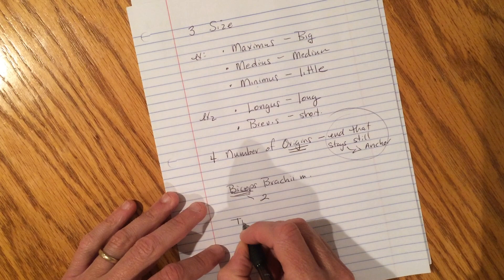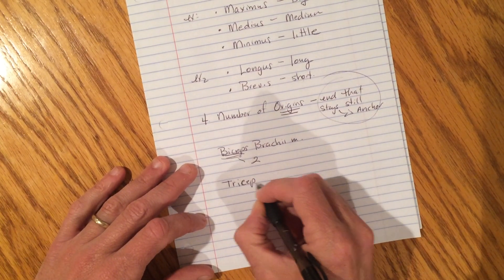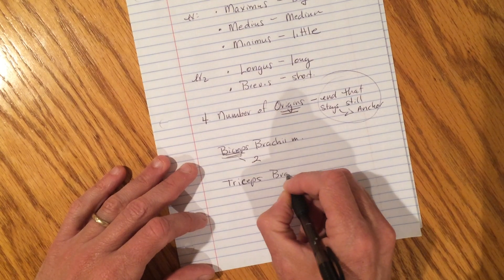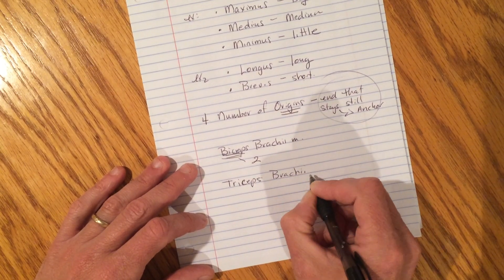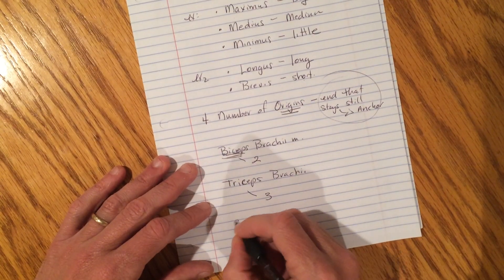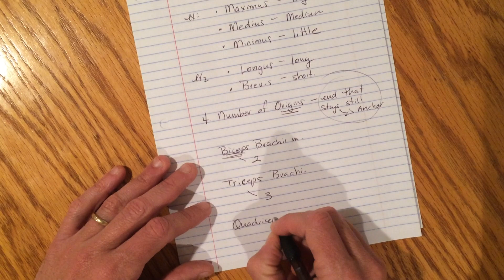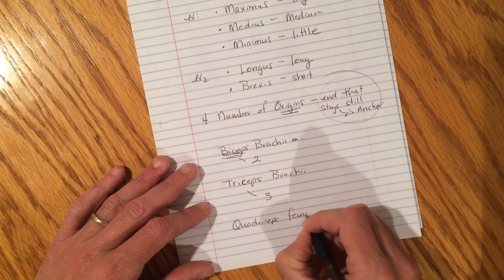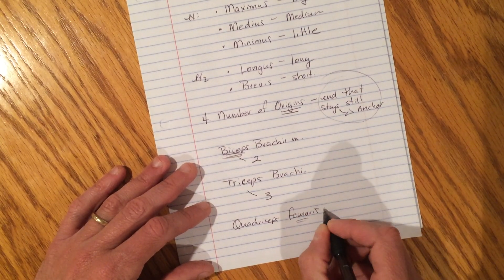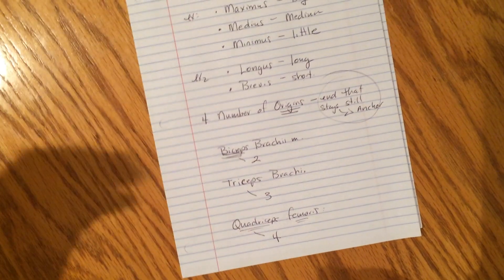And then there's another muscle. Triceps, brachii. Triceps, brachii. How many heads of origin? Let me... Three. Look how easy it is. How about this one? Quadriceps, femoris, which is technically a muscle group, but how many heads of origin? Four. Pretty easy.